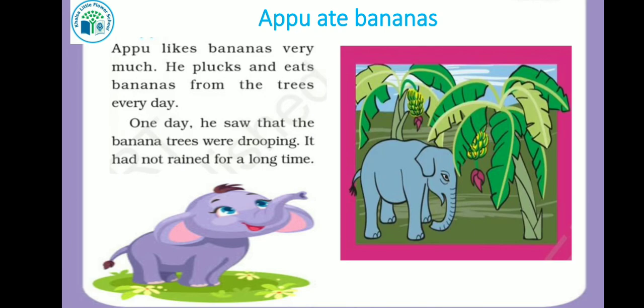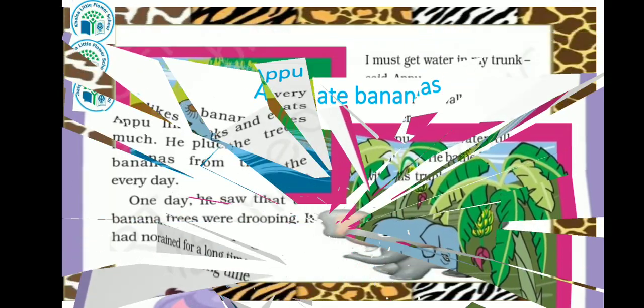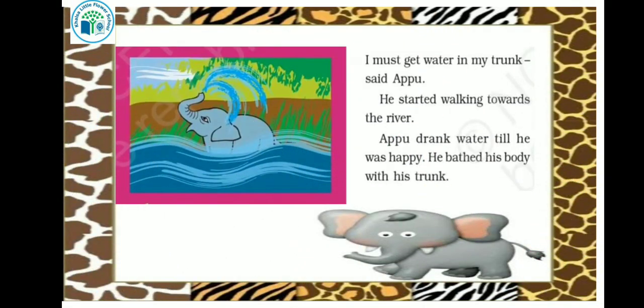One day he saw that the banana trees were drooping. Appu saw that the banana tree had completely wilted and bent down. He said, I must get water in my trunk. Appu said that he should bring water in his trunk. He started walking towards the river.